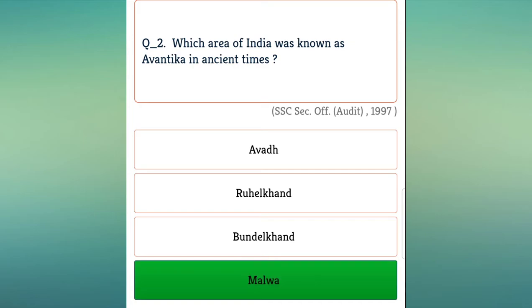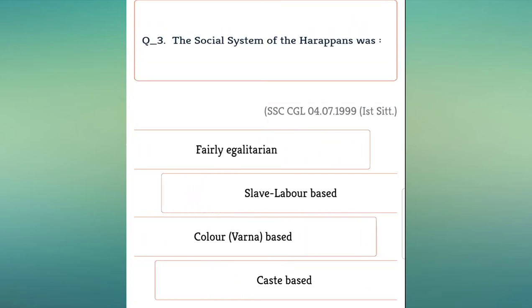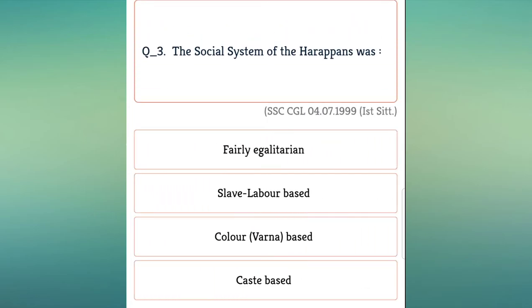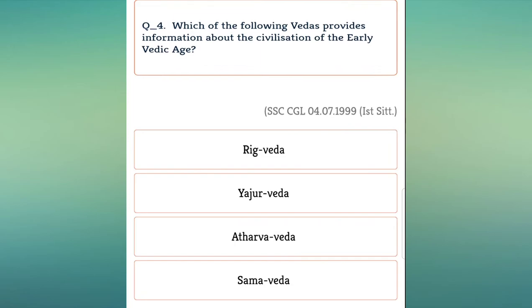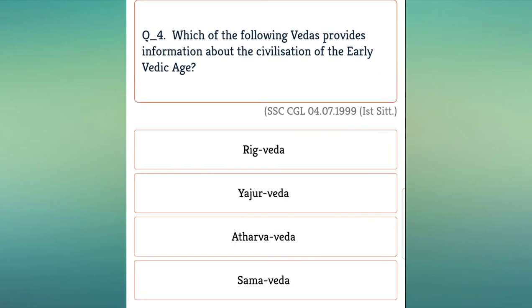The social system of the Harappan civilization was fairly egalitarian. Which of the following Vedas provides information about the civilization of the early Vedic age?